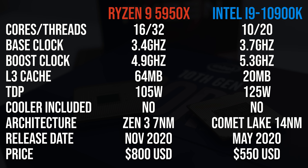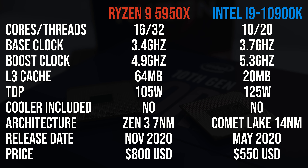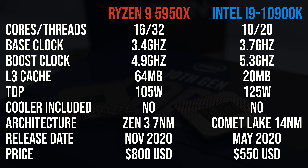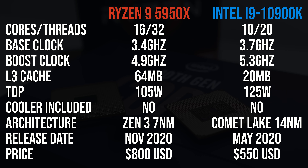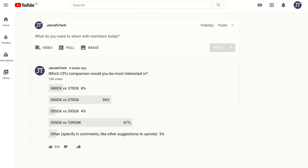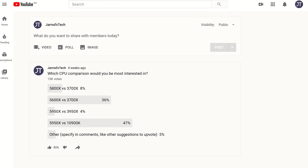I'm comparing these two processors because they're currently the best options on offer from Intel and AMD's mainstream lineup and I want to see the difference. In terms of price though, the 5950X is $250 USD more expensive, so comparing to the 5900X makes more sense, but a lot of you guys still wanted to see this comparison.